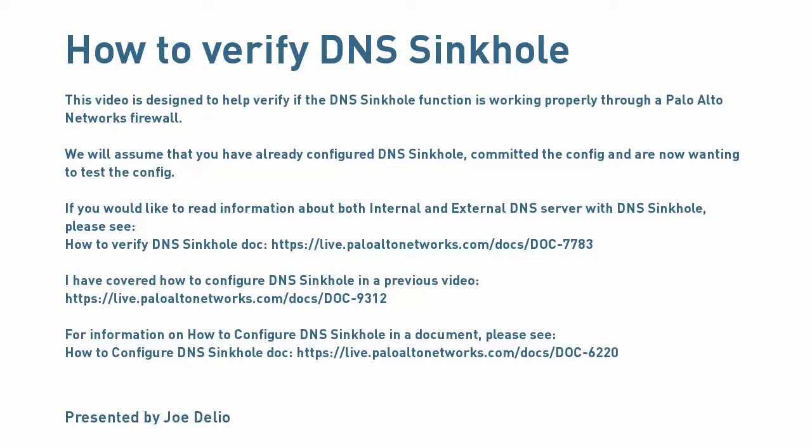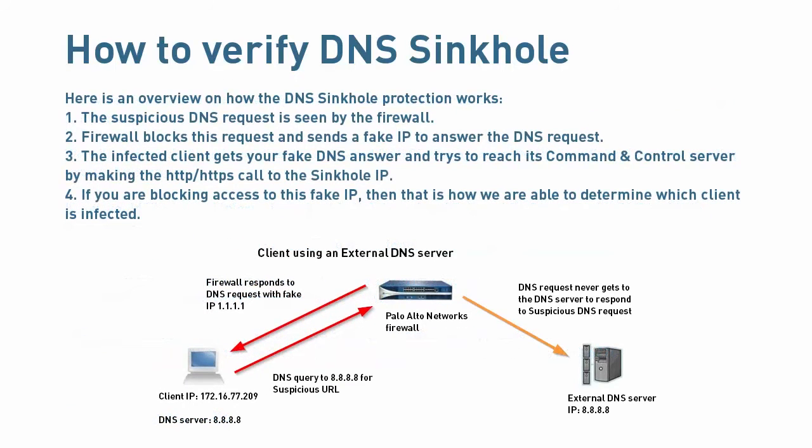So, how does the DNS sinkhole feature work? I'll be talking about a client using an external DNS server making a malicious DNS request. Here's an overview of how the DNS sinkhole protection works. Number one, the suspicious DNS request is seen by the firewall. Number two, the firewall blocks this request and sends a fake IP to answer the DNS request. Number three, the infected client gets the fake DNS answer and tries to reach its command and control server by making an HTTP or HTTPS call to the sinkhole IP.